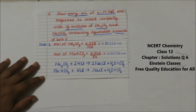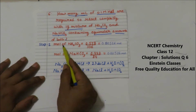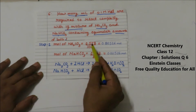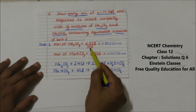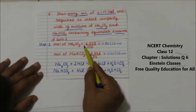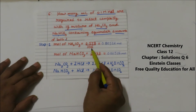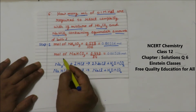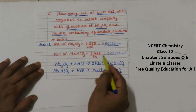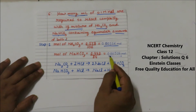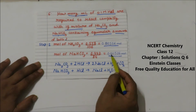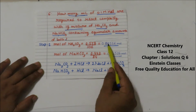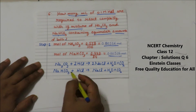Now we know the mass of both components. We calculate moles as given mass divided by molar mass. Moles of sodium carbonate = 0.558 / 106 = 0.00526 mol, and moles of sodium bicarbonate = 0.442 / 84 = 0.00526 mol. As expected, the moles of both components are equal, confirming the equimolar condition.